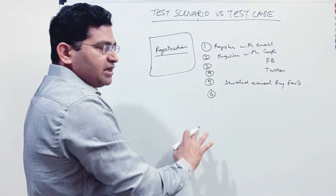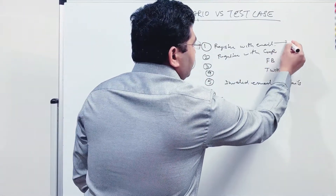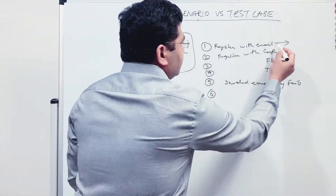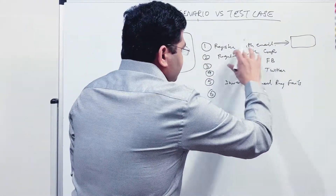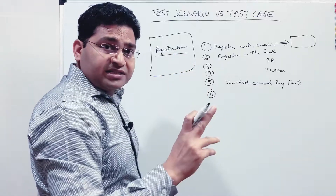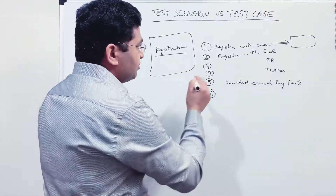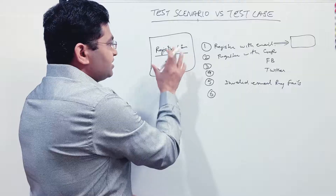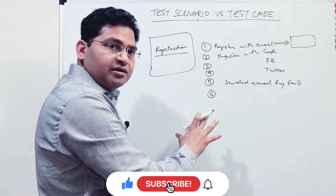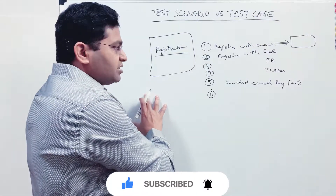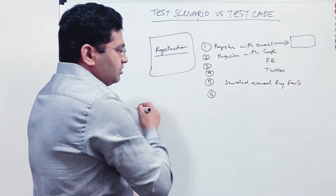Once you have these high-level, one-liner scenarios written, the next step is to pick each scenario and convert it into a test case. A scenario can have just one test case, or a scenario can be a combination of multiple test cases. For example, a scenario at the feature level may be specific to registration, but an end-to-end scenario could combine registration, login, and adding items to cart.